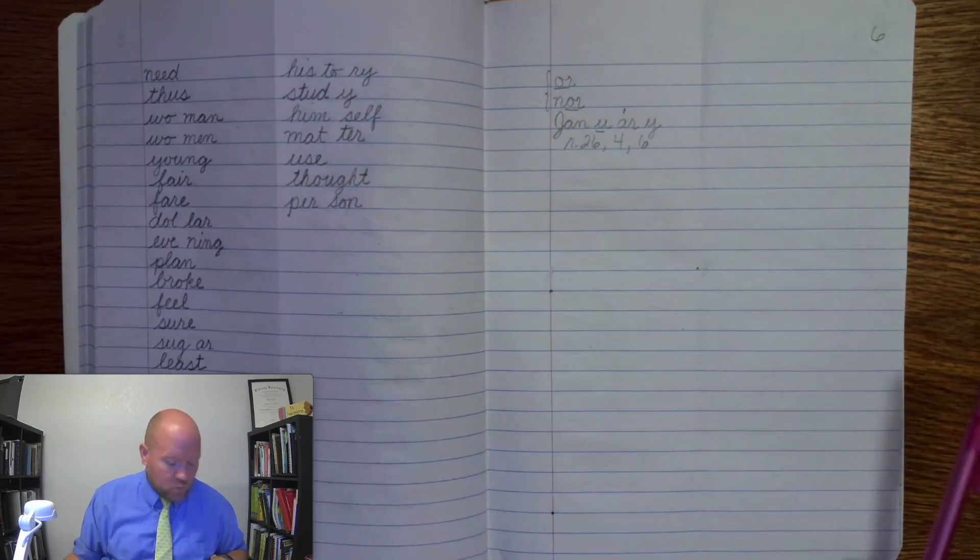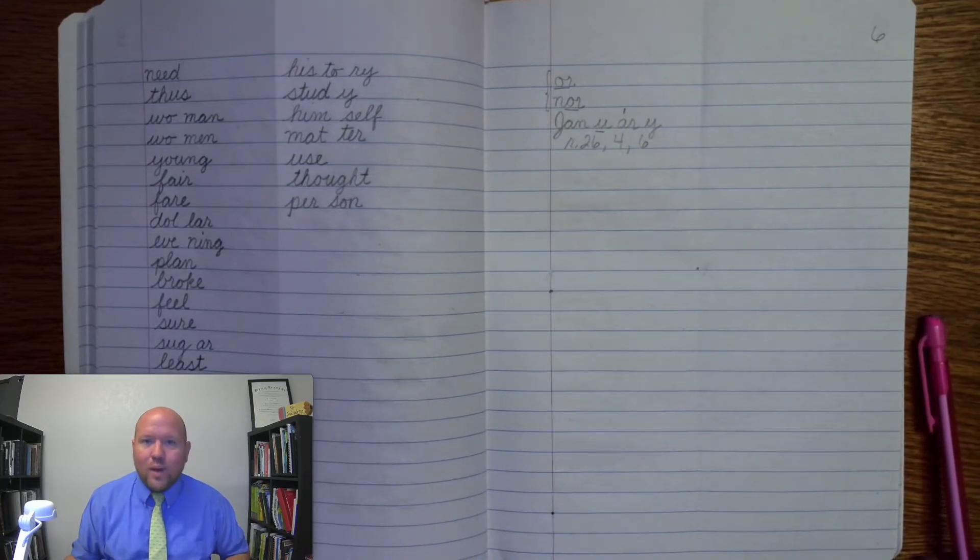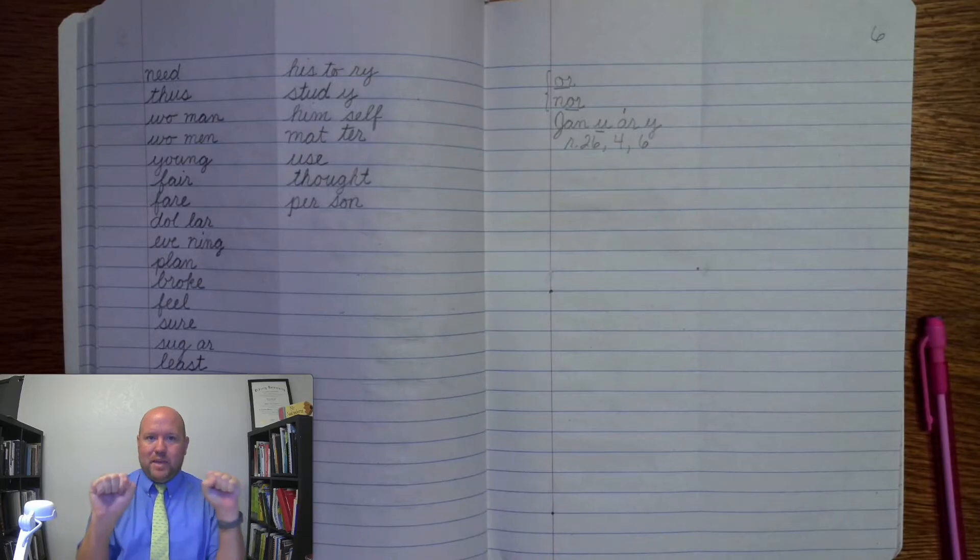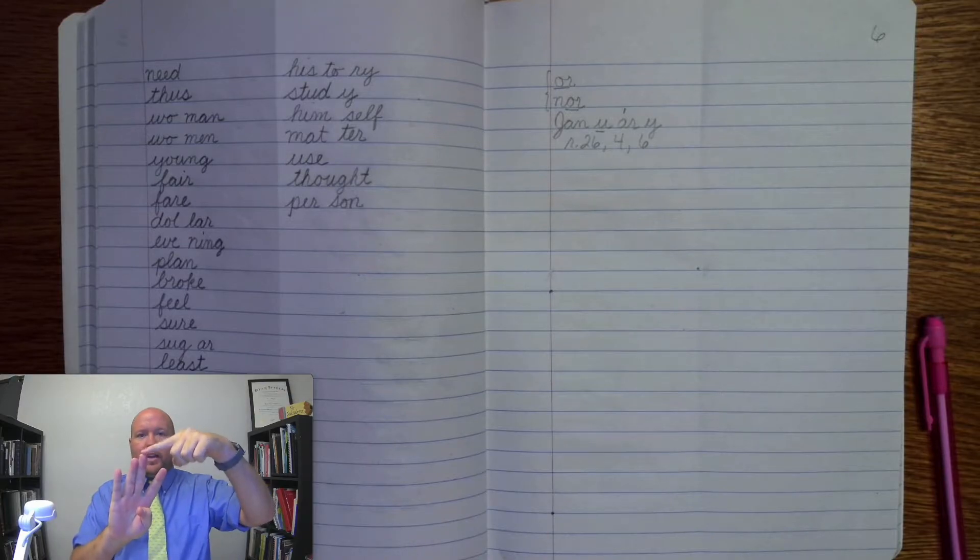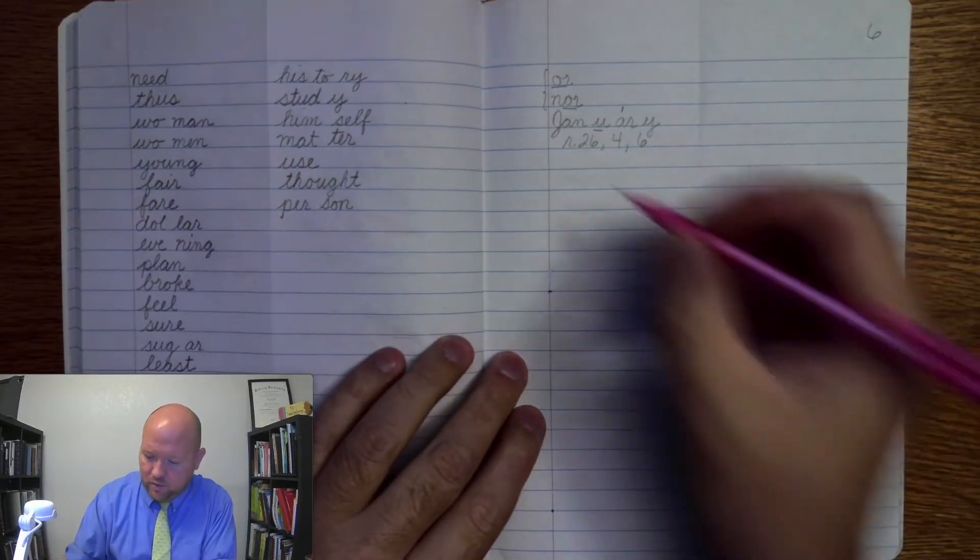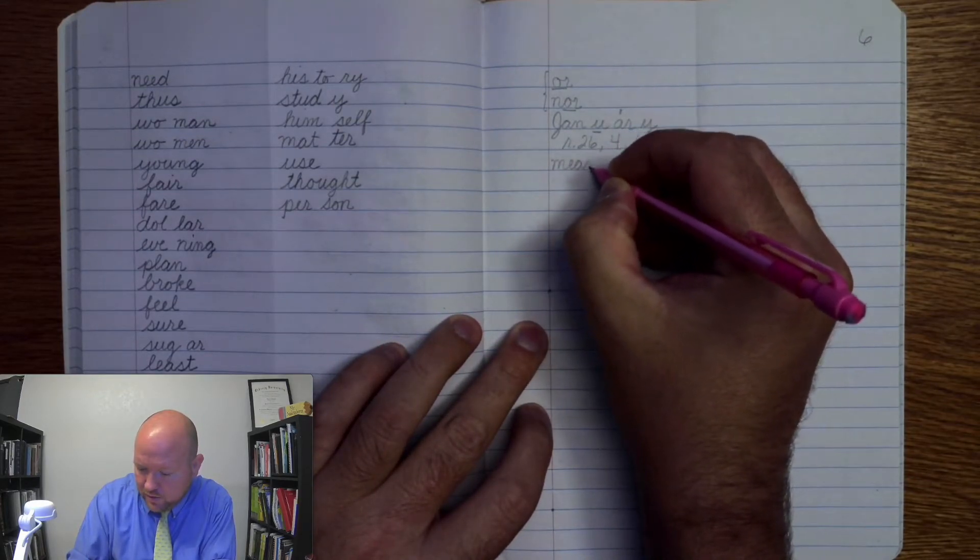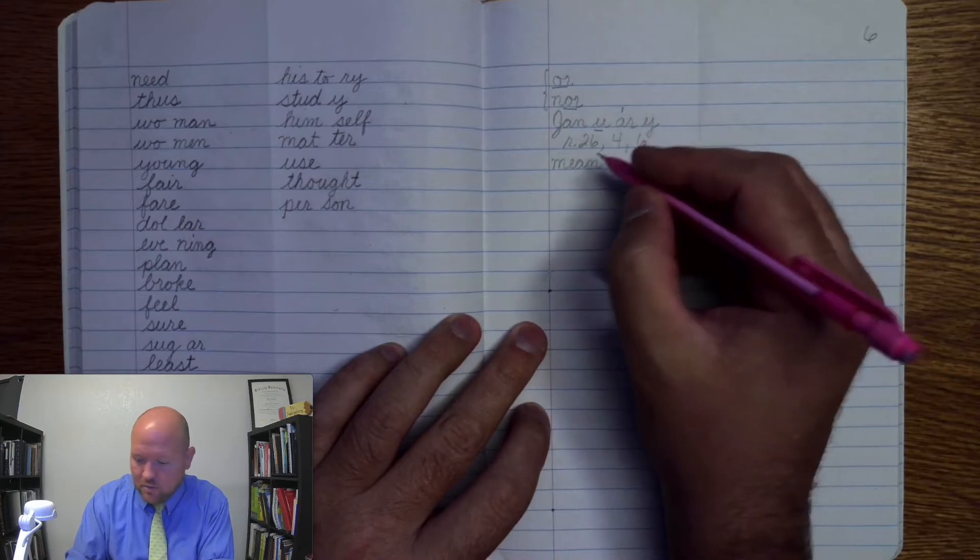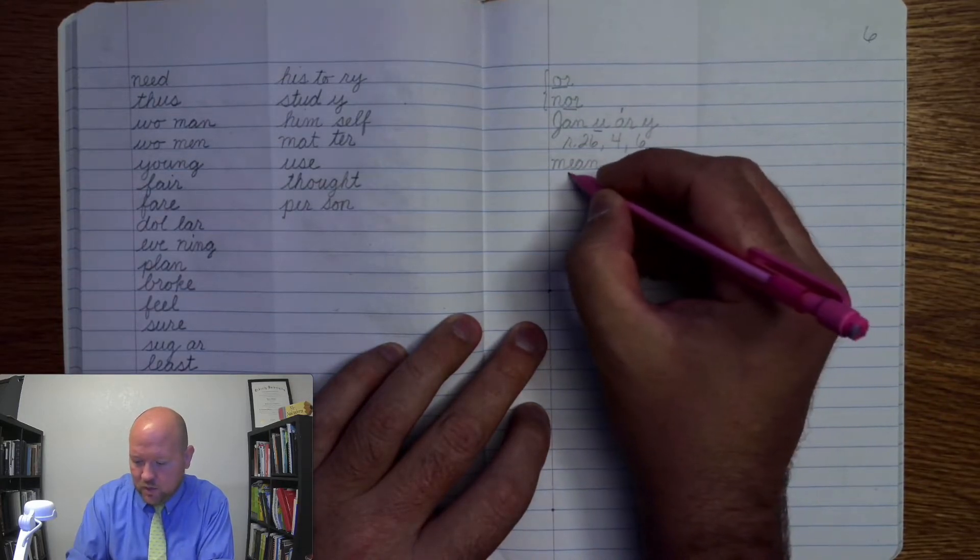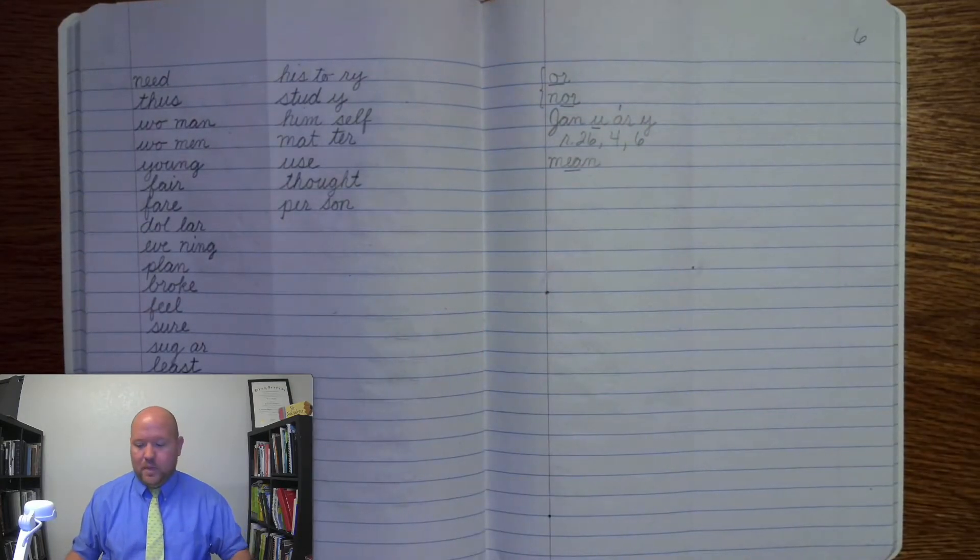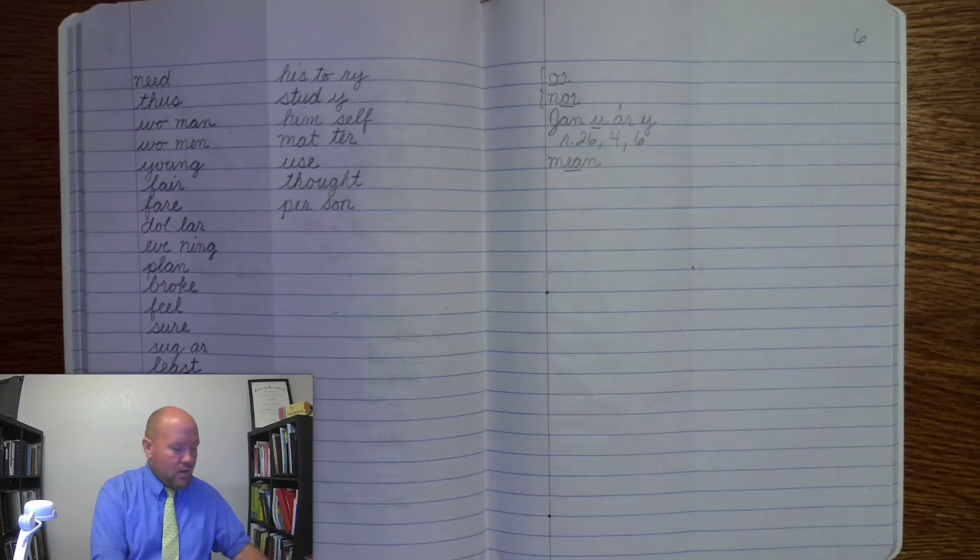Next one is the word mean. Like what did you mean? Mean. Base word mean. M. E. A. N. We're going to use the E.A. phonogram here. Okay. Mean. Go write mean. M. E.A. N. Mean. Markings. M. E. Once. N. Mean.